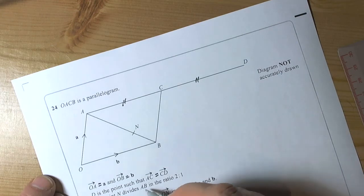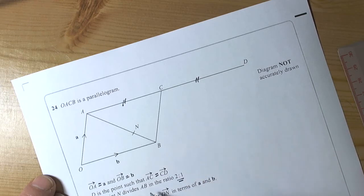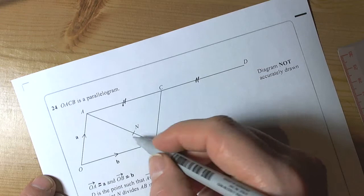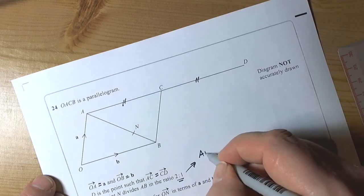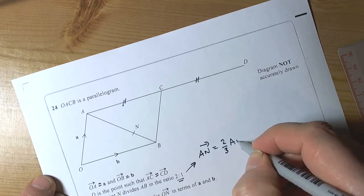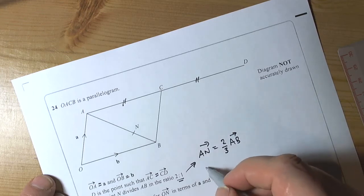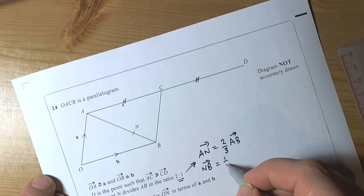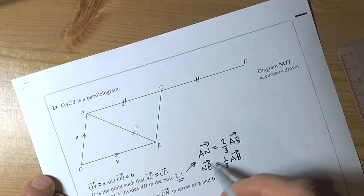And the point N divides AB in the ratio of 2 to 1. Well, the ratio of 2 to 1 means we're working with 2 thirds and 1 third. So AB is that, so this is basically telling me then that AN is equal to 2 thirds of AB and NB is equal to 1 third of AB. So that's what the ratio is telling us.